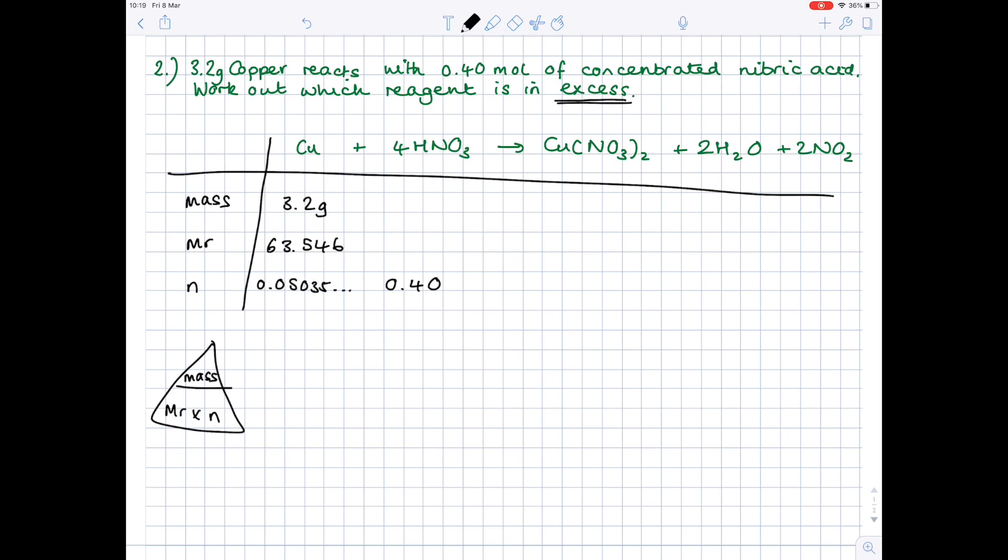Now we need to work out the theoretical number of moles of nitric acid based on this number here. The way in which we do that is by simply looking at the big numbers in front of the formulas. We can see that there's a 4 in front of nitric acid. So you actually just need to take that number you've just calculated and multiply it by 4 to get 0.201428. And now have a look at these numbers. That is the theoretical number of moles you would need to react completely with all that copper. How much do we actually have? We have 0.4, which means we have loads of nitric acid in comparison to copper, which is why nitric acid is in excess.